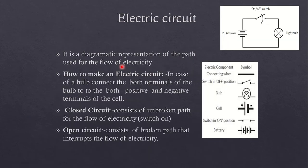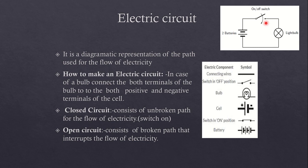The next topic is the electric circuit. Here we will try to understand what do you mean by the electric circuit. In the electric circuit, these lines show the wires, this is the bulb, and this is the battery. All these things — wires, bulb, batteries, and the switch — are all connected with each other. It is a diagrammatic representation of the path that is used for the flow of electricity.